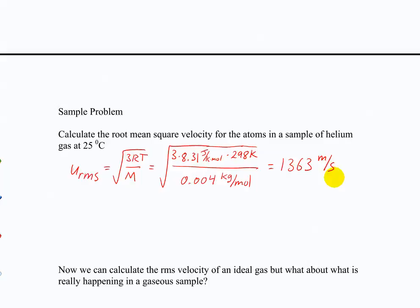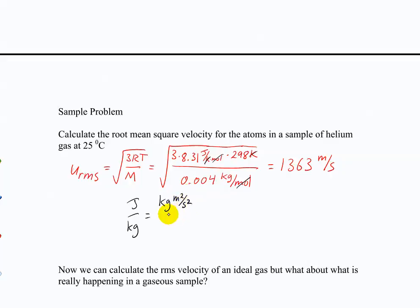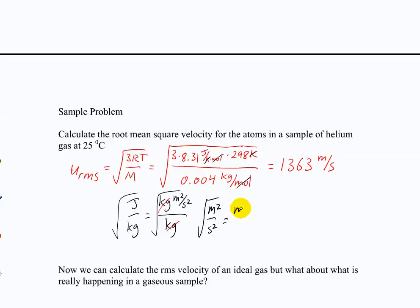That's a way of saying the average velocity of the helium atoms in the sample is 1363 m/s. How do we get meters per second? Kelvin cancels with Kelvin, moles cancel with moles, leaving joules per kilogram. A joule is kg·m²/s², so joules over kilograms gives m²/s², and the square root gives meters per second.